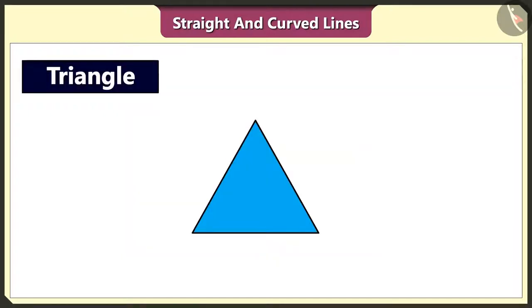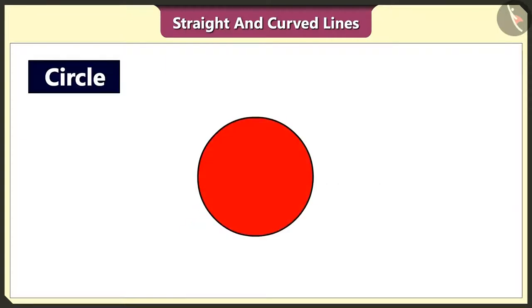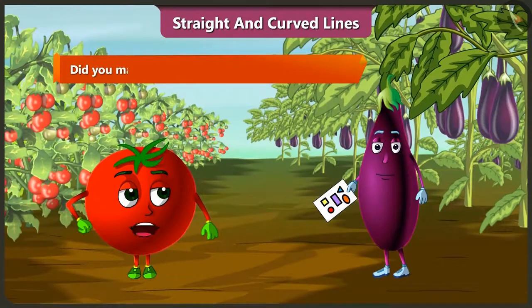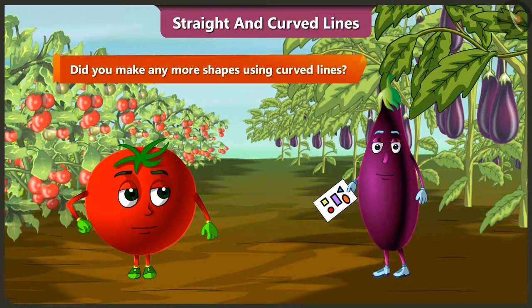Look, this triangle is also made using three straight lines. Yes. And this circle is made using a curved line. Did you make any more shapes using curved lines?